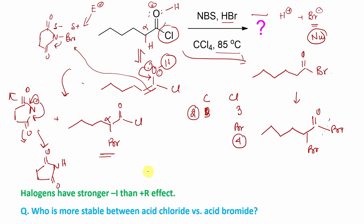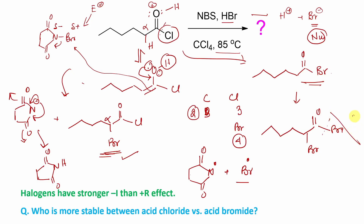Now, regarding the radical pathway: NBS under thermal conditions can break down to produce a nitrogen radical plus a bromine radical. This bromine radical can follow the same pathway — reacting with the enol — to produce the same final product. Both mechanisms are similar in outcome. I have discussed one; I suggest you try the second one by yourself. In this way, what you get is the alpha-bromo derivative. And since acid bromide cannot be formed, there is no chance of that product. The reaction proceeds through the enol, so halogenation happens at the alpha position only.